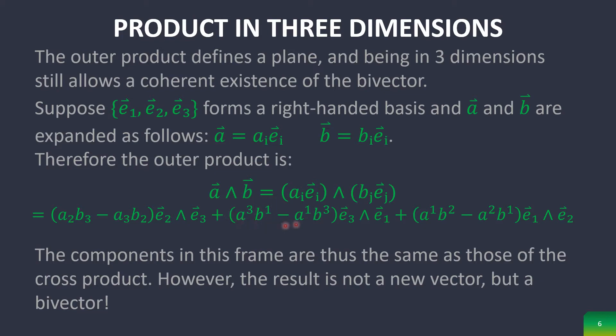these products, the reason that these are switched is because the anti-symmetric property of e sub three wedge e sub one, which will actually be explained in the next slide. And note that this is not a new vector, but a bivector. This is a bivector, and these are the component forms of each bivector in specific planes.